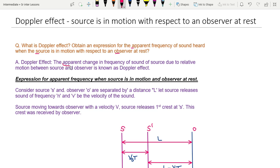This is an apparent change, not a real change in frequency. This involves the observer and the frequency. This is the relative motion between source and observer. The Doppler effect is defined by the relative motion between source and observer.